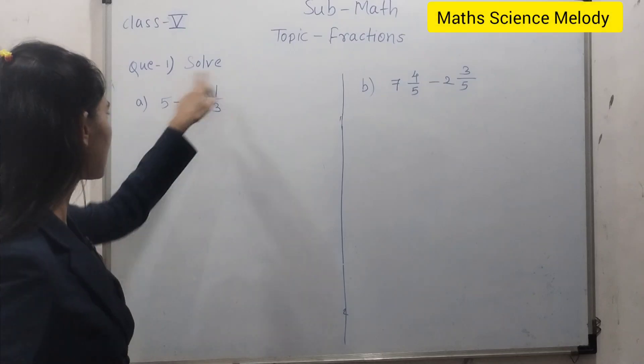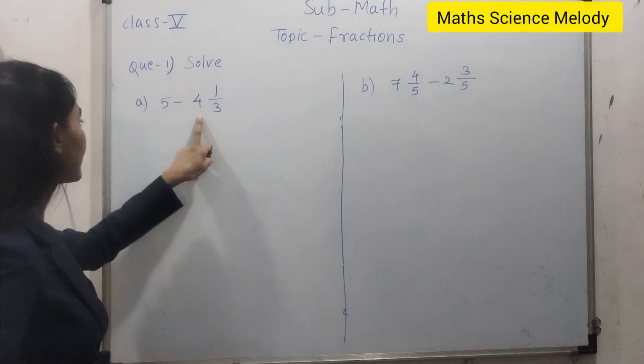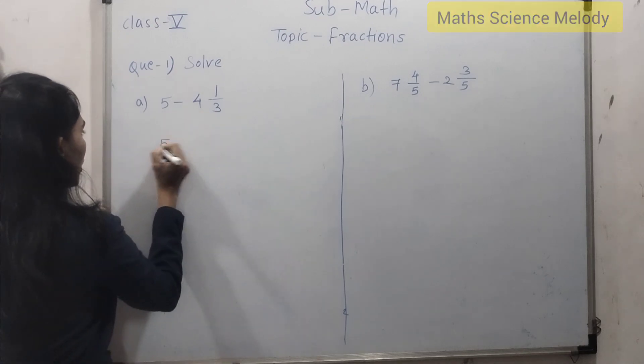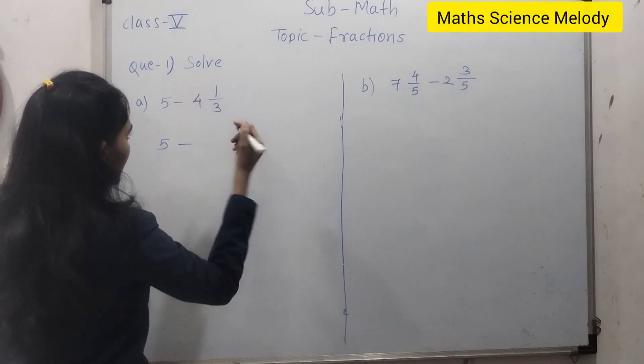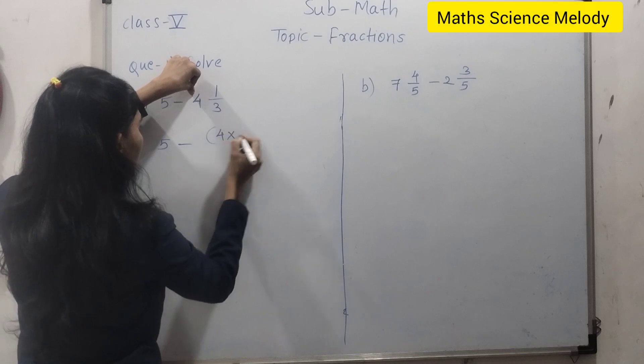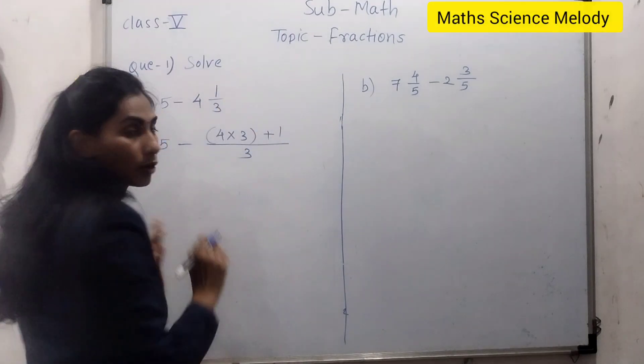5 is the whole number minus this mixed number is given here. So to subtract this, first you need to convert this mixed number into an improper fraction. So you all know very well how to convert this mixed number into improper fraction. Just multiply this whole number with the denominator plus this numerator. Don't forget to write this denominator as it is.